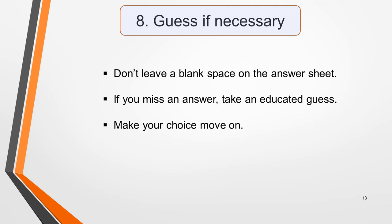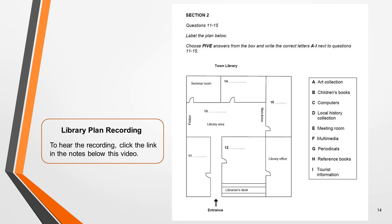My final tip is to never leave a blank space on the answer sheet. If you miss an answer, take an educated guess — this gives you at least some chance of getting it right. Don't stress about a missed answer or it will affect your ability to answer the next set of questions. Just make your choice and move on. You now have the opportunity to practice this strategy on our sample question. Pause the video, listen to the recording and choose the correct answers from the list A to I. Write them down so that you can check them later. To hear the recording, click the link in the notes below this video titled Library Plan Recording.